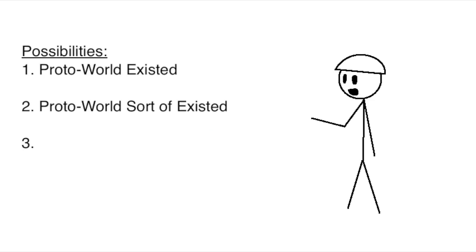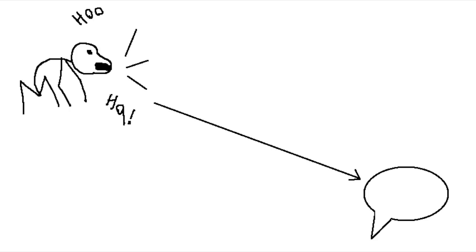Two, Proto-World sort of existed. Like, let's say language evolved really slowly out of the simpler, non-language forms of communication our ancestors used. In between, they would have used some sort of communication that was more sophisticated than what chimpanzees do, but less sophisticated than real language.